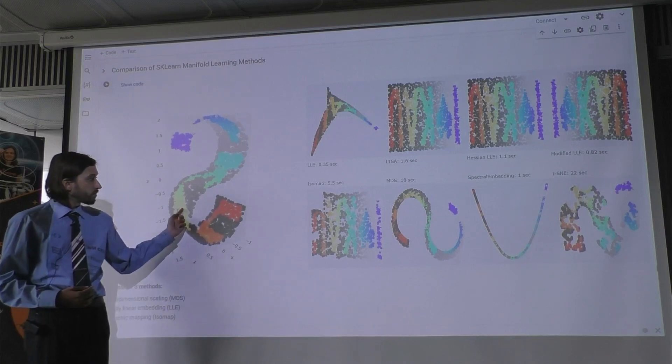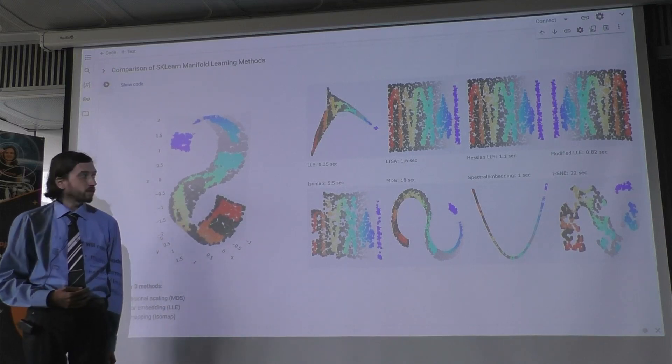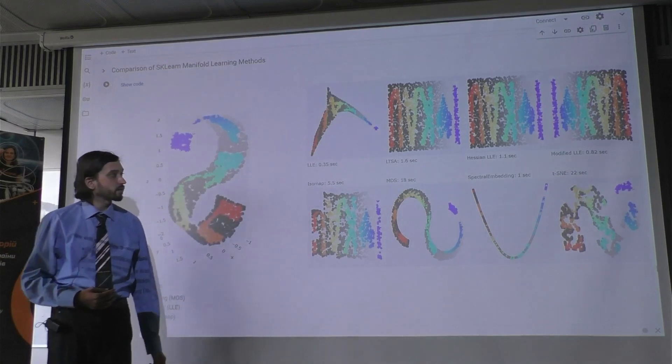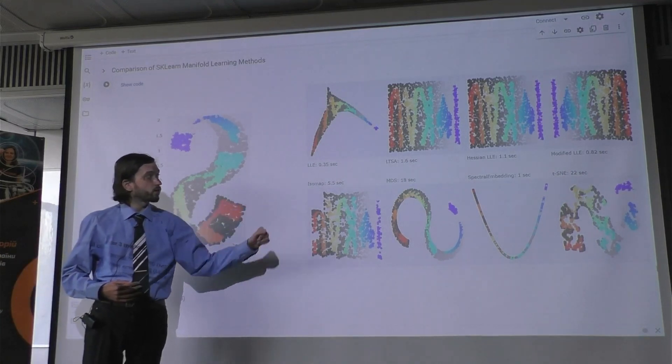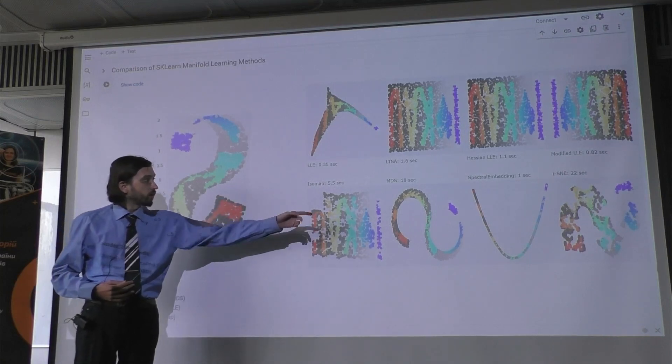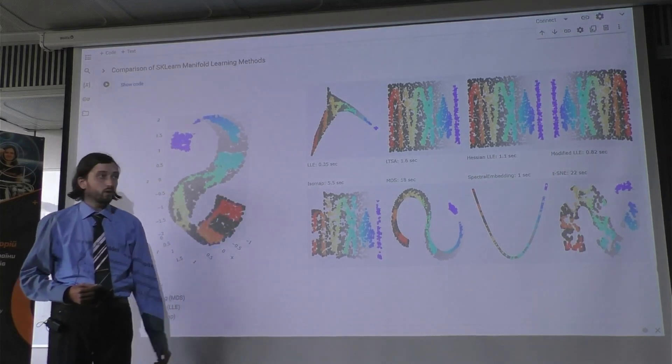We are trying to somehow extract the information and to squeeze them into 2D. And here you see a number of methods that we will be considering in our course, including locally linear embedding, multidimensional scaling, or isomap.